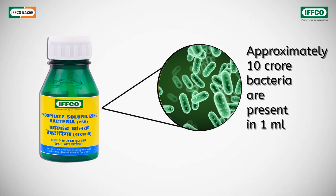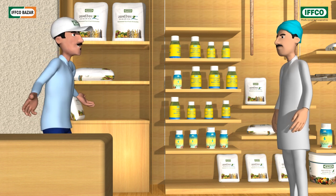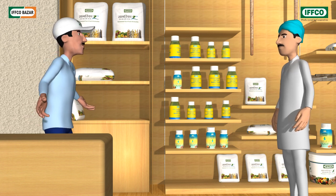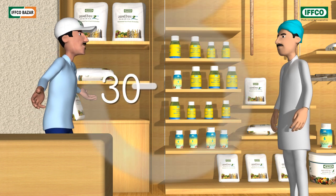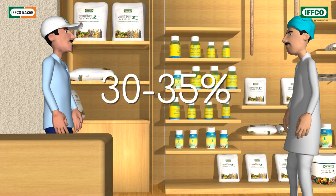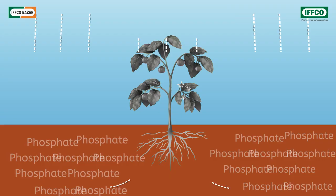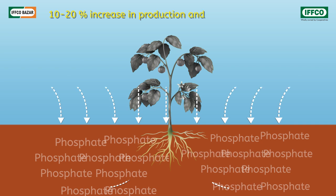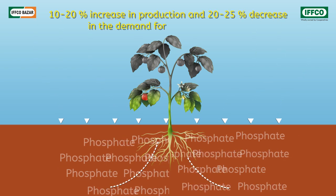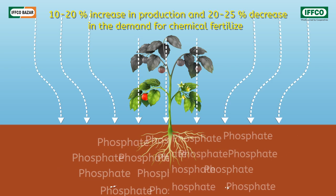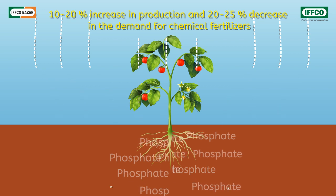One milliliter of it contains around 100 million living bacteria. 30 to 35 percent of the phosphate-containing fertilizers that we administer to the crops lies inactive in the ground.